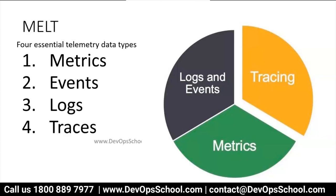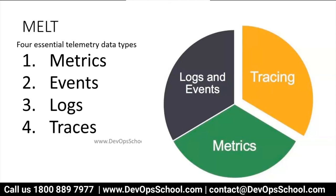T in MELT is for traces — APM, application performance monitoring. You collect traces to do APM. If someone asks your plan, you say: we want to set up observability for our product by collecting MELT — metrics, events, logs, and traces — using Datadog or other tools like New Relic or Prometheus. After collection, you analyze it using an intuitive UI, and after analysis you identify key metrics like CPU, RAM, disk, login/logout events, error logs, and traces where response time exceeds a threshold. Then you alert and create dashboards.